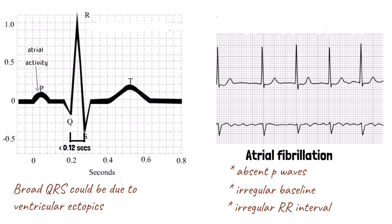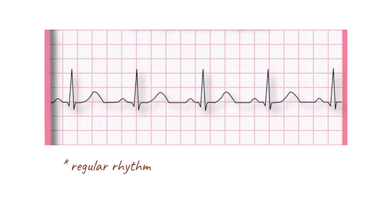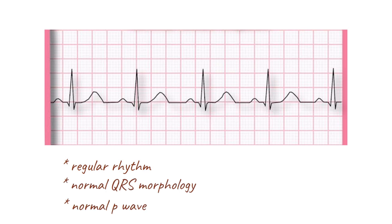If the rhythm is regular, the QRS duration and morphology is normal, and there is a P wave present before each QRS complex, then a normal sinus rhythm is said to be present.